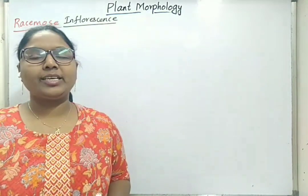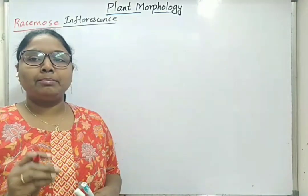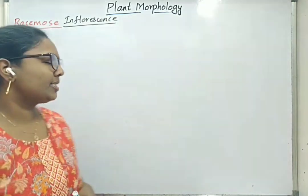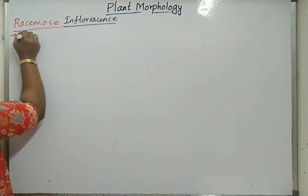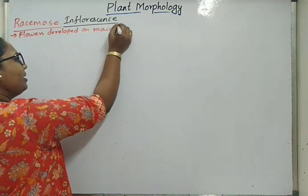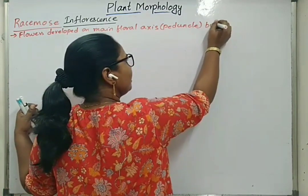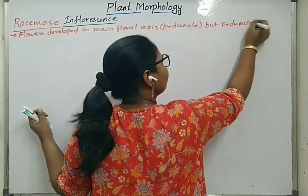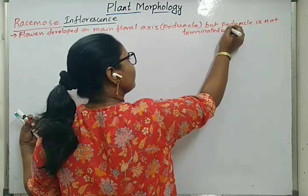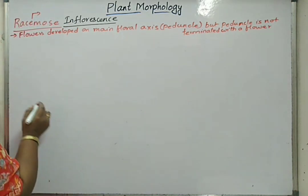Hello students. Now we will learn about different types of racemose inflorescence. Racemose inflorescence means flowers are developed on the main floral axis, but the tip region or the apex of the peduncle is not terminating with a flower. Such type of inflorescence is called racemose inflorescence. In racemose inflorescence, we see arrangement of flowers in acropetal manner or order.